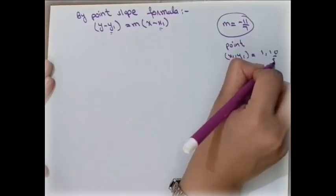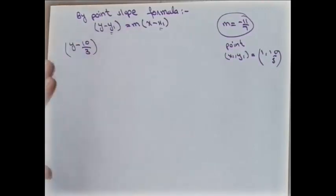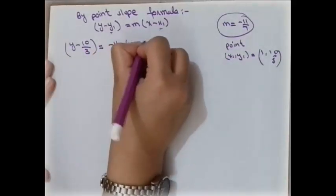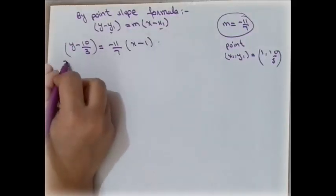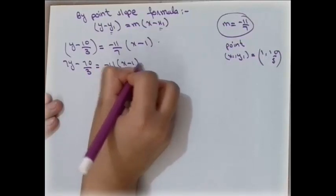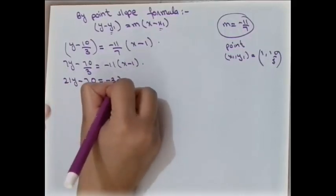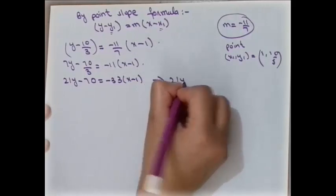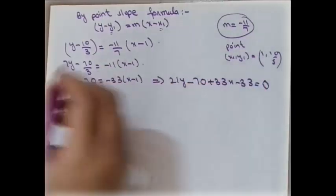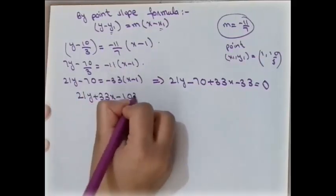Using the point-slope formula y − y1 = m(x − x1) with point (1, 10/3) and slope −11/7: y − 10/3 = (−11/7)(x − 1). Multiplying through: 7y − 70/3 = −11(x − 1), then 21y − 70 = −33(x − 1), giving 21y − 70 + 33x − 33 = 0, and the equation of the tangent is 33x + 21y − 103 = 0.